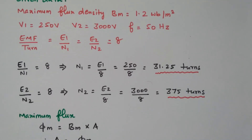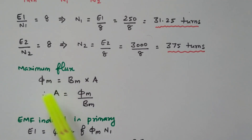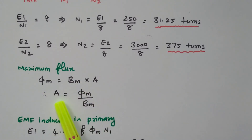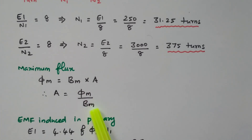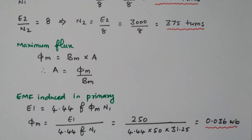Now we will find the area of the core. The maximum flux equals flux density times area, so flux density Bm = φm/A, which gives φm = Bm × A. Our aim is to find the area: A = φm/Bm. The maximum flux density Bm is already given, but we need to find the maximum flux φm first.